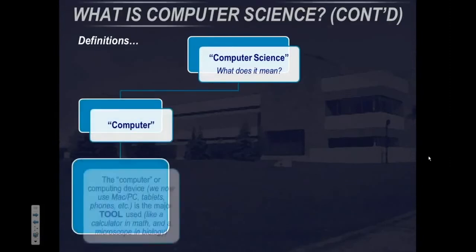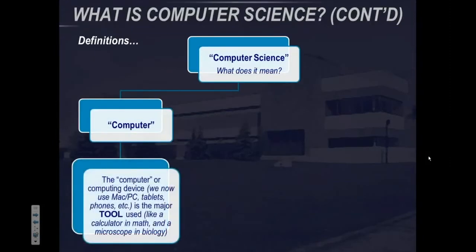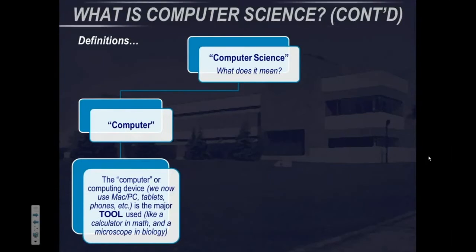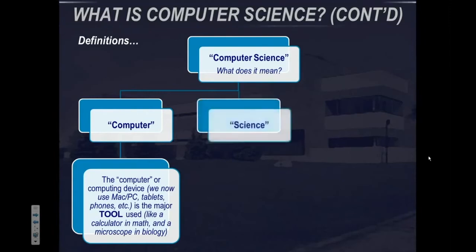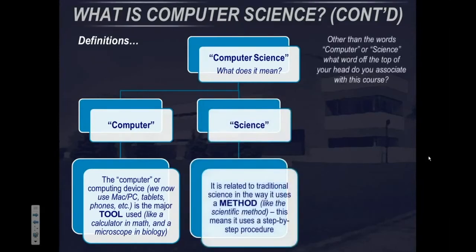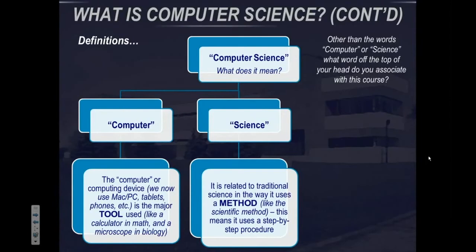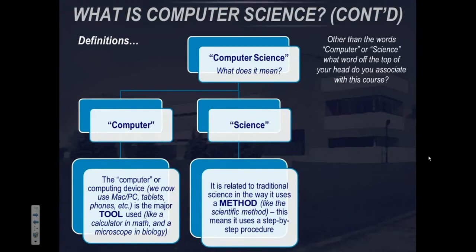But let's define some terms. What does computer science mean? The computer — well, that's a computing device. We now have a variety of those: Macs, PCs, tablets, phones, etc. It's the major tool used in the course, like a calculator is used in math or a microscope in biology. The word science is related to the traditional sciences in the way that it uses a method, like the scientific method — essentially a step-by-step process.